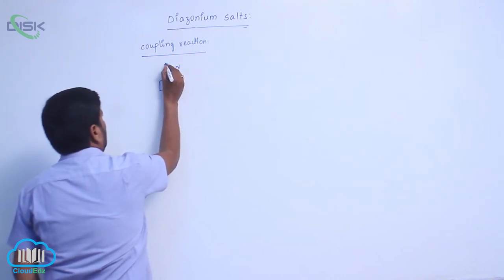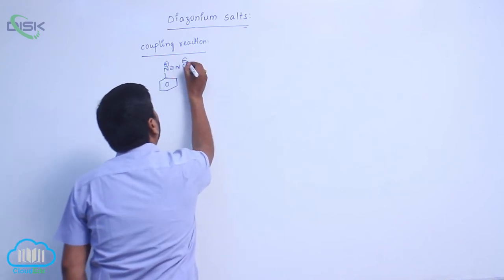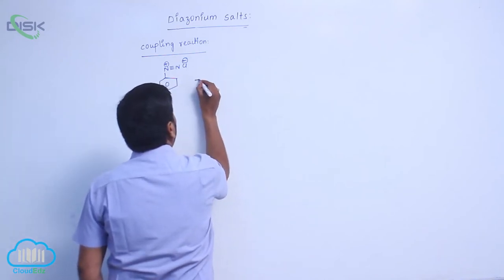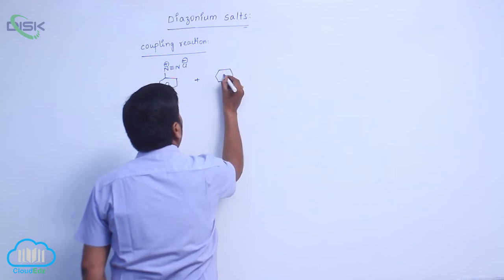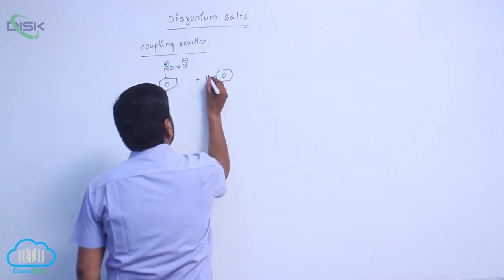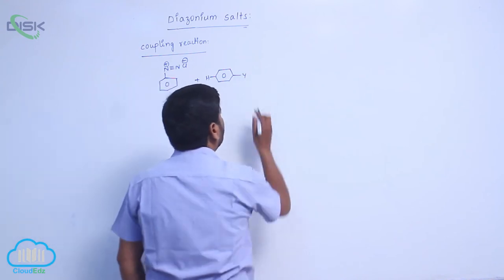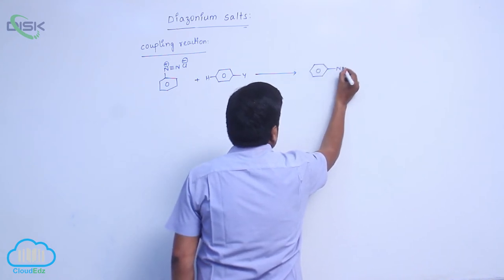Benzene Diazonium Chloride. Erase hydrogen then erase Y to form N double bond N.